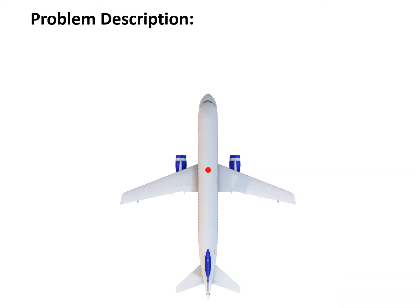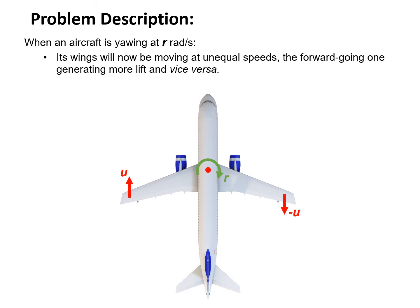We need to first define this problem before we do the derivation. We have this aircraft yawing at a rate of R. Its wings will now be moving at unequal speeds. The forward-going left wing will generate more lift, and the right wing will be the backward-going one, so it will generate less lift. Meanwhile, the fin will be moving sideways, and this sideways motion will cause a side force on the fin.